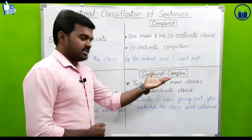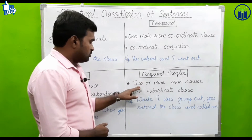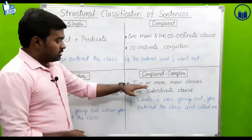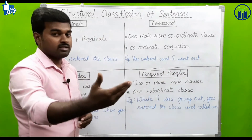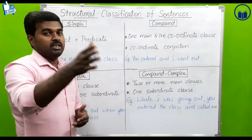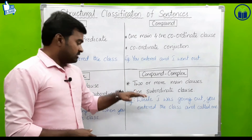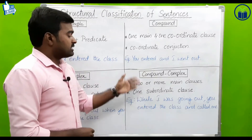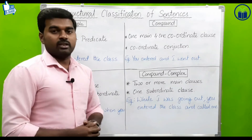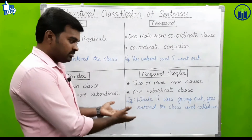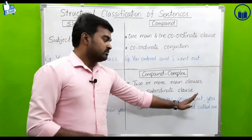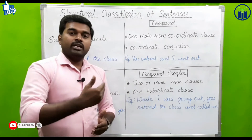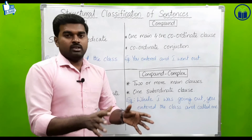Let us look at compound-complex sentence. It consists of two or more main clauses and at least one subordinate clause. So the compound-complex sentence has at least two main clauses, and that is why it also requires at least one subordinate clause alongside them.